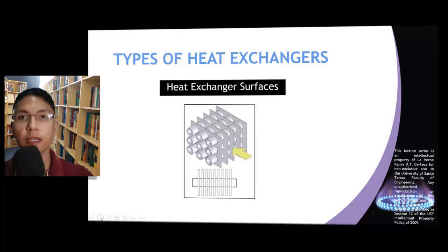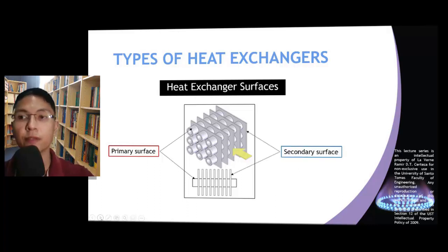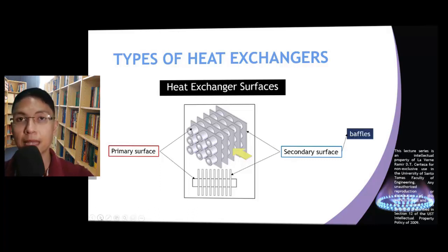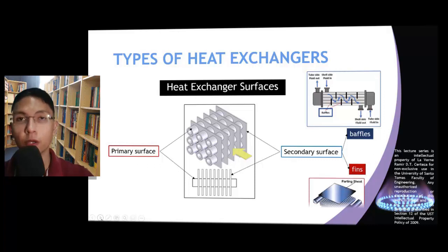The surfaces found in a heat exchanger can be classified into two based on their intended purpose. A primary surface serves to separate the hot fluid and the cold fluid, thereby preventing the two fluids from mixing. A secondary surface can have two functions: it can either direct fluid flow or increase the heat transfer surface area. An example of a secondary surface that directs fluid flow is baffles, commonly found in shell and tube heat exchangers. An example that increases surface area is fins.